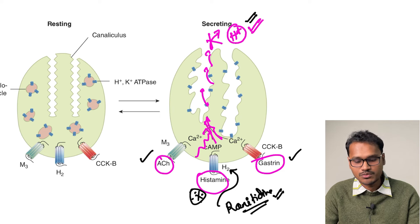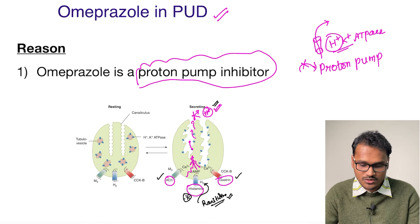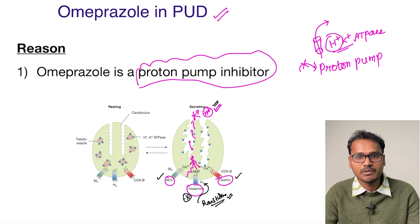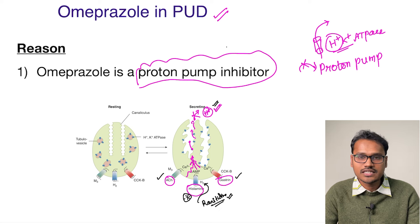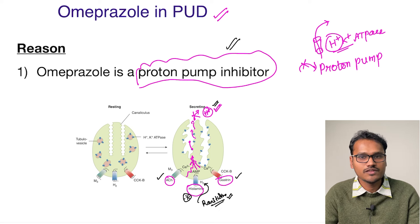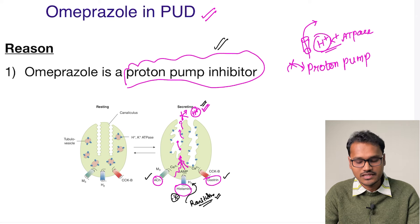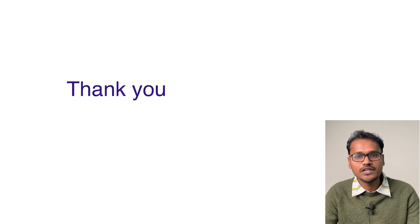This is how the proton pump inhibitor omeprazole works in patients. It is a very simple answer — it inhibits the entire final pathway of H+ secretion. I hope that's clear. Thank you for watching the video; we'll see you in the next one.